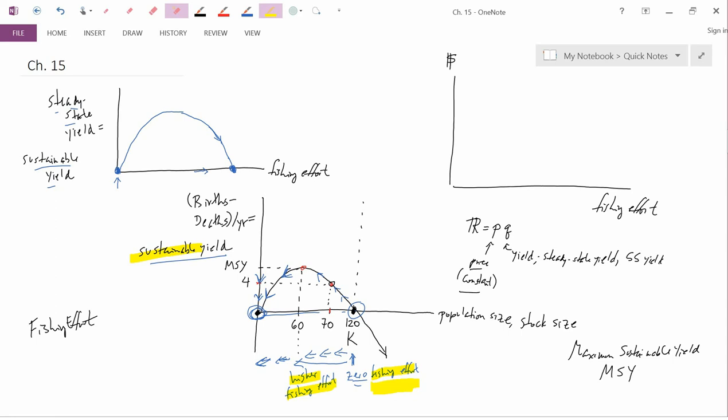How do I graph total revenue? Well, price is a constant. Suppose price is equal to 1. If price were equal to 1, then total revenue would just be 1 times Q, which would just be Q, which is the same as yield. And so the fishing effort graph would be exactly the same as the graph in the upper left. The units are different, but this would be exactly the same as this graph here.